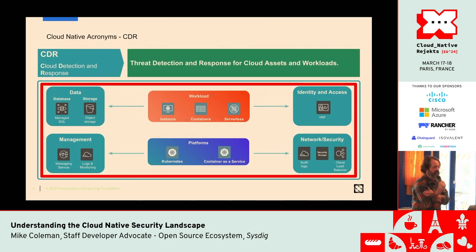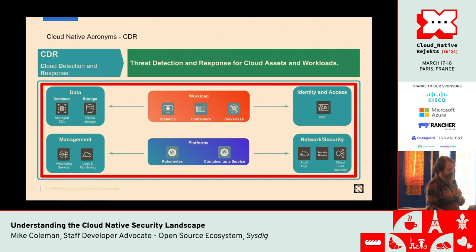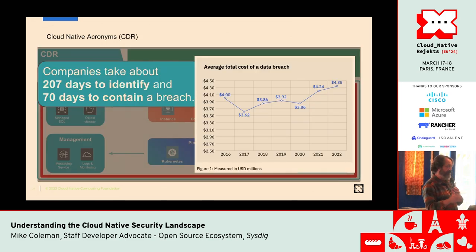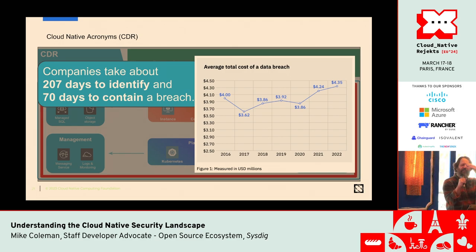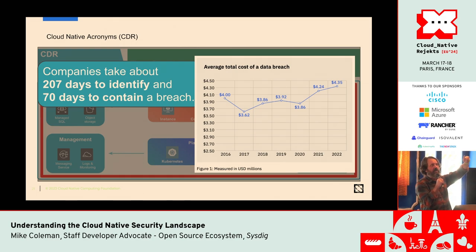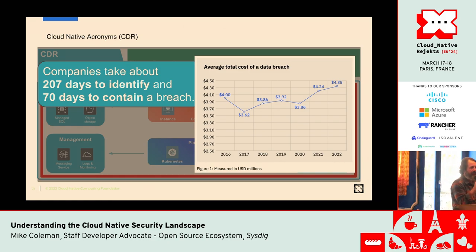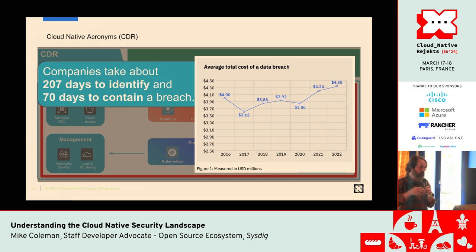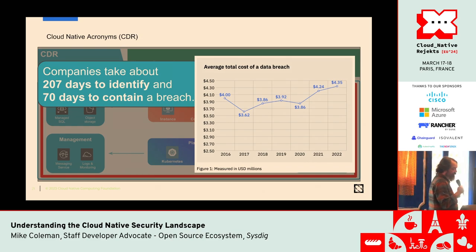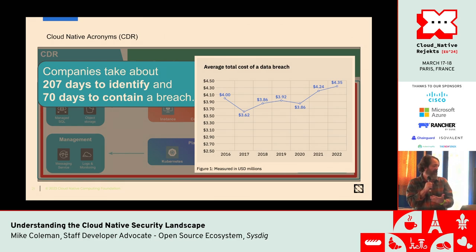The next one is cloud detection and response, and that goes across the whole spectrum. How long from the time a vulnerability was introduced to when it was exploited — was it Neo4j? 10 years. So I talk about what you're running on Tuesday isn't what you're running on Wednesday, but this was something that took 10 years to figure out. Based on research, it's 270 days to identify and 70 days to contain a breach.